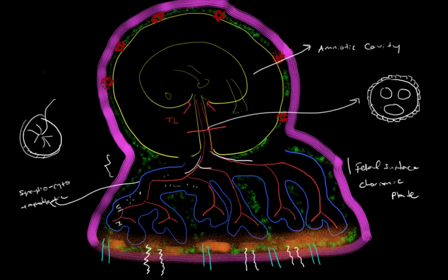And then beyond that, so this is your syncytio-cyto-trophoblast going around your fetal villi. And even outside that, you have another layer, because this is what we could call villus-trophoblast. Beyond that, you have some trophoblast cells that are extra villus-trophoblast.